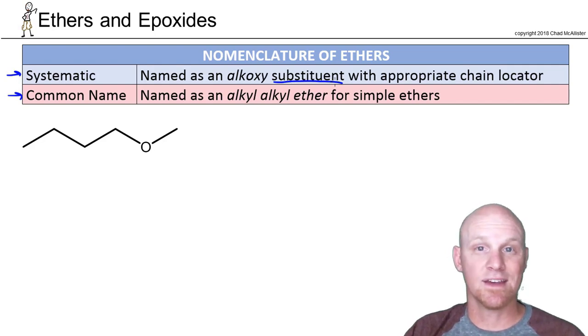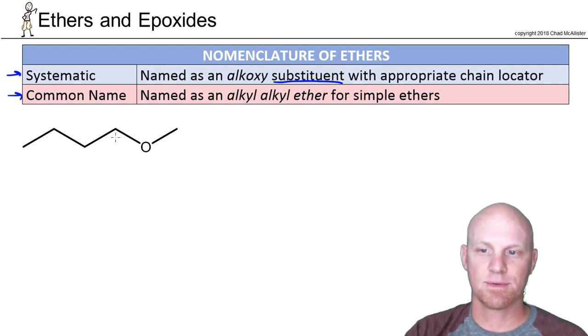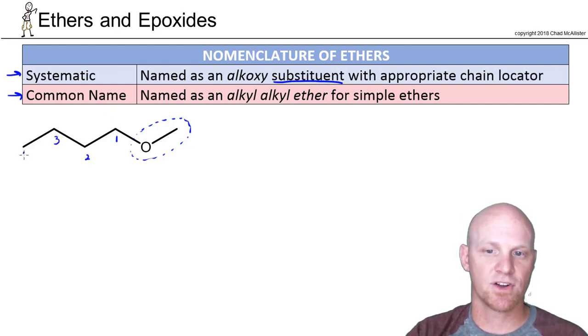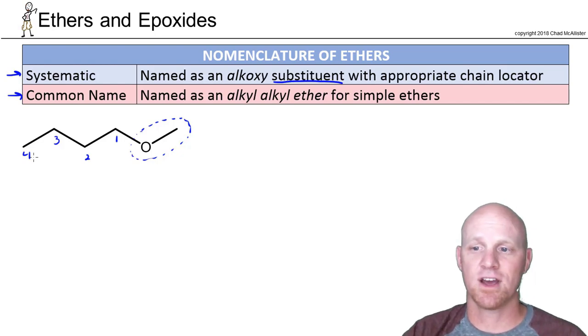So first thing you do is decide what side of the ether is the parent chain. It's usually whichever side has a longer carbon chain or is more complex. In this case that's going to be this side. So this is going to be our substituent, the smaller side. And it's attached to a parent chain. It's a 4-carbon parent chain. It's going to be butane. And we'll number it to give the only substituent you have the lowest possible number. So we want to make sure it's attached to carbon 1 of the parent chain.